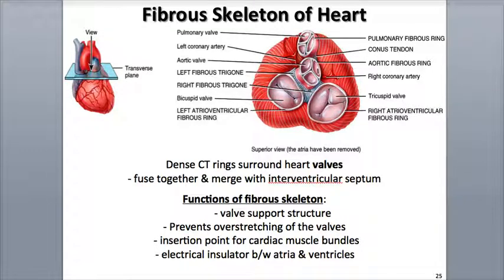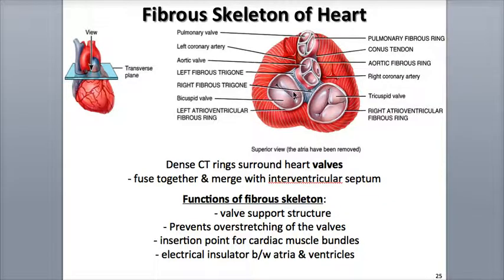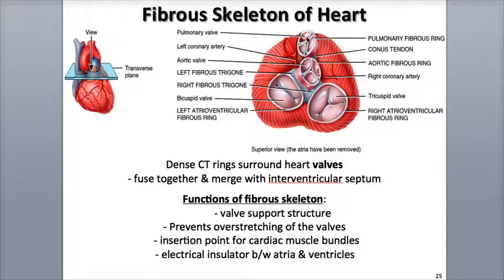Another part of the heart wall is the fibrous skeleton, which acts as a structural foundation for the four heart valves. Here we have our two AV valves — the left AV valve, or the bicuspid, and the right AV valve, or tricuspid — and here are the two semilunar valves, the pulmonary valve and the aortic valve.